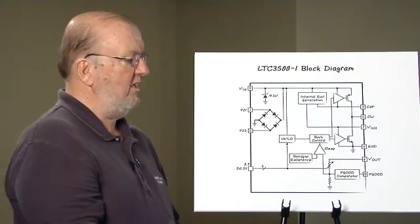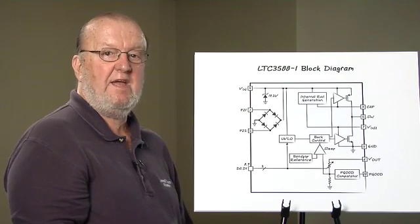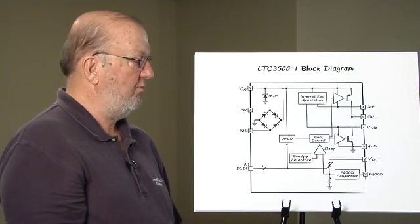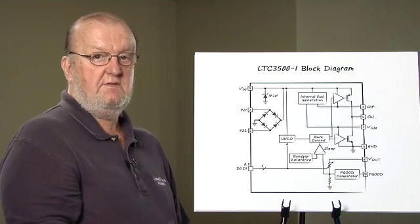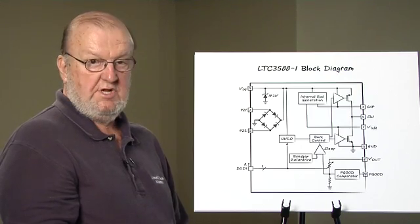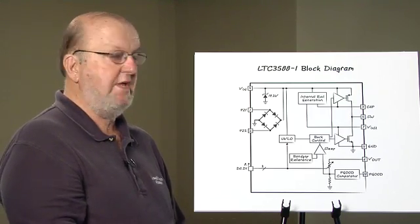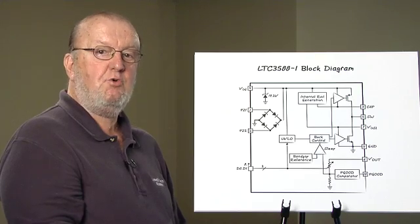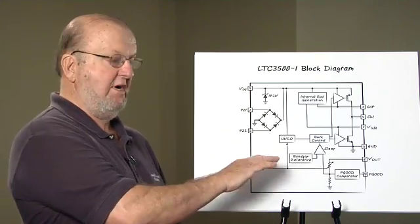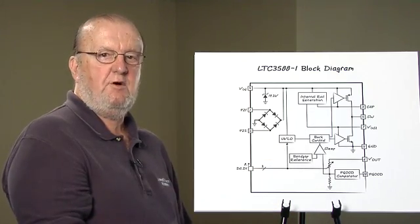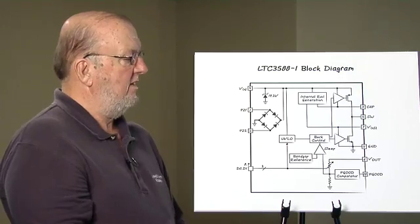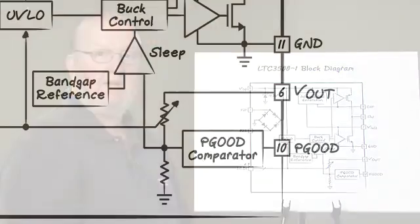When it enters sleep mode, it presents less than 90 nanoamps of output load to the output. The output then starts to decay due to load current or leakage currents. When the output drops slightly below the regulation point, the buck regulator turns back on again and recharges the output storage element. We also have a power good detector. At this point we have a complete energy harvesting system using the 3588.